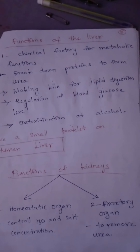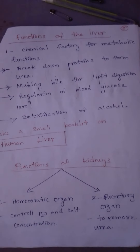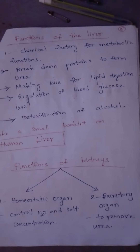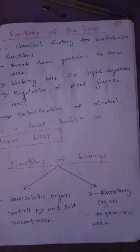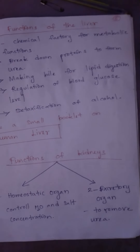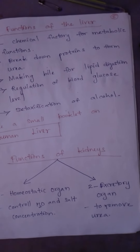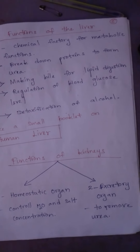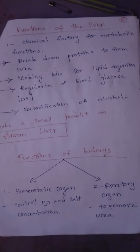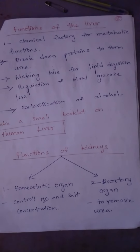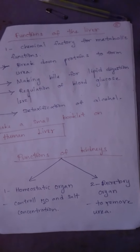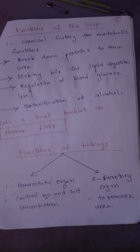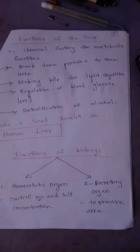The liver is also responsible for making bile for lipid digestion, to increase the surface area of lipids to be enzymatically digested — this is called emulsification. Another function is regulation of blood glucose level. If the glucose concentration is very high, glucose is stored as glycogen.